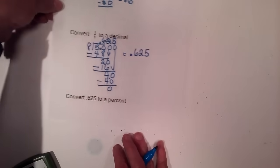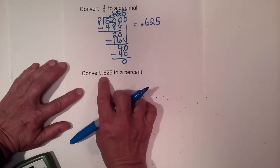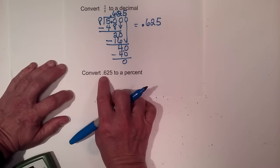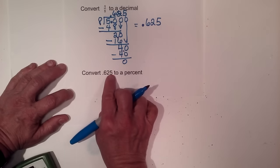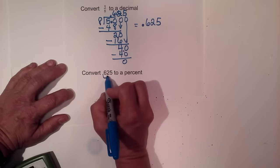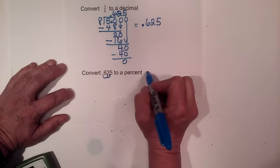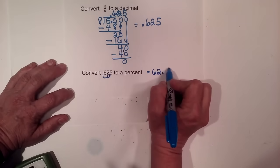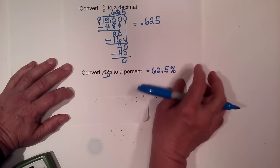Now let's convert a decimal to a percent. When you take a decimal to a percent you're saying per one hundred, so multiply point six two five by one hundred. We just move the decimal two places to the right, because this is base ten. That gives sixty-two point five percent.